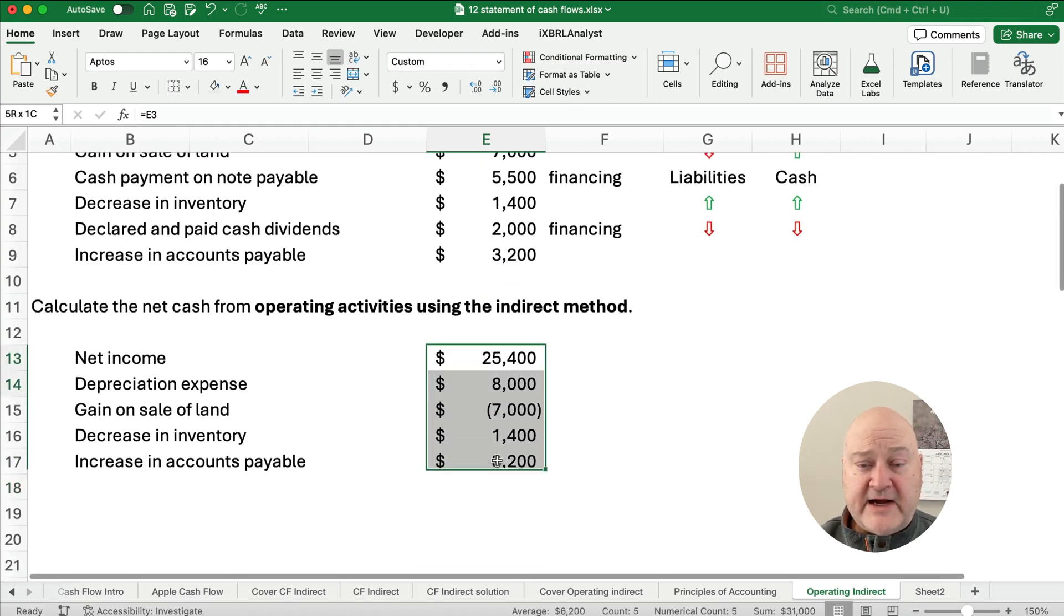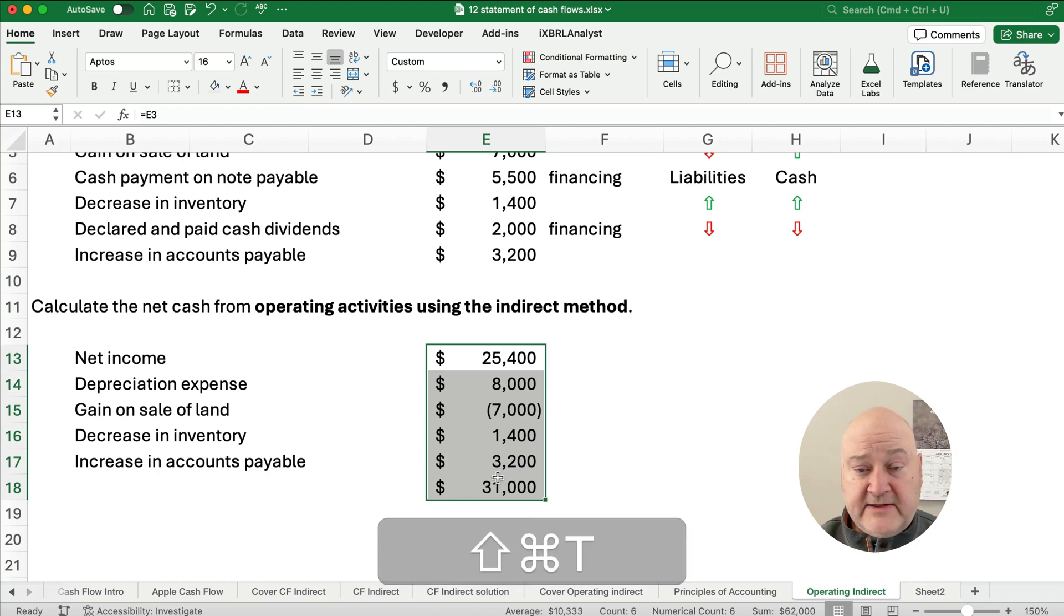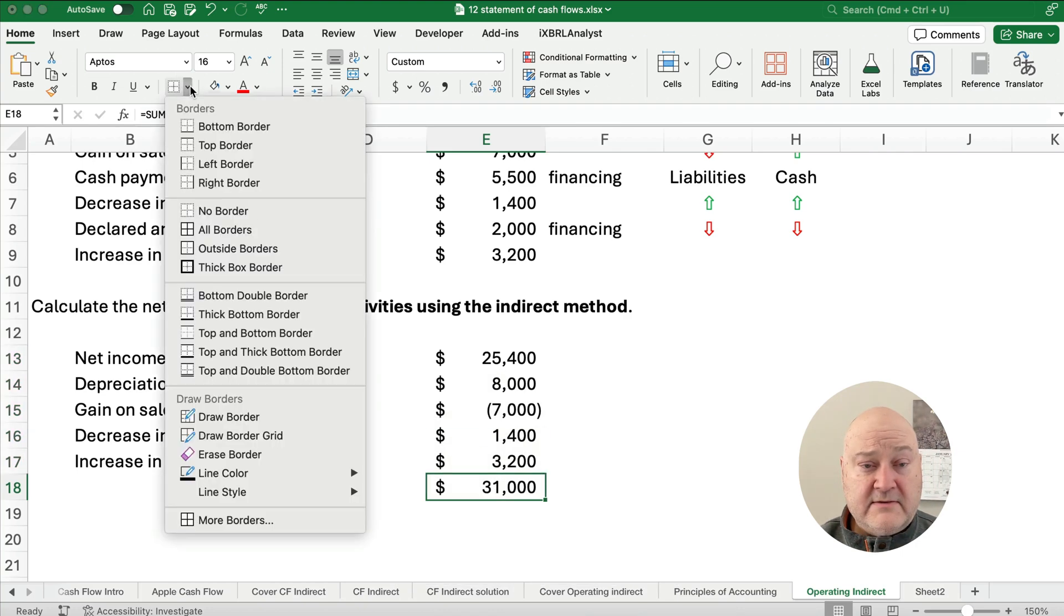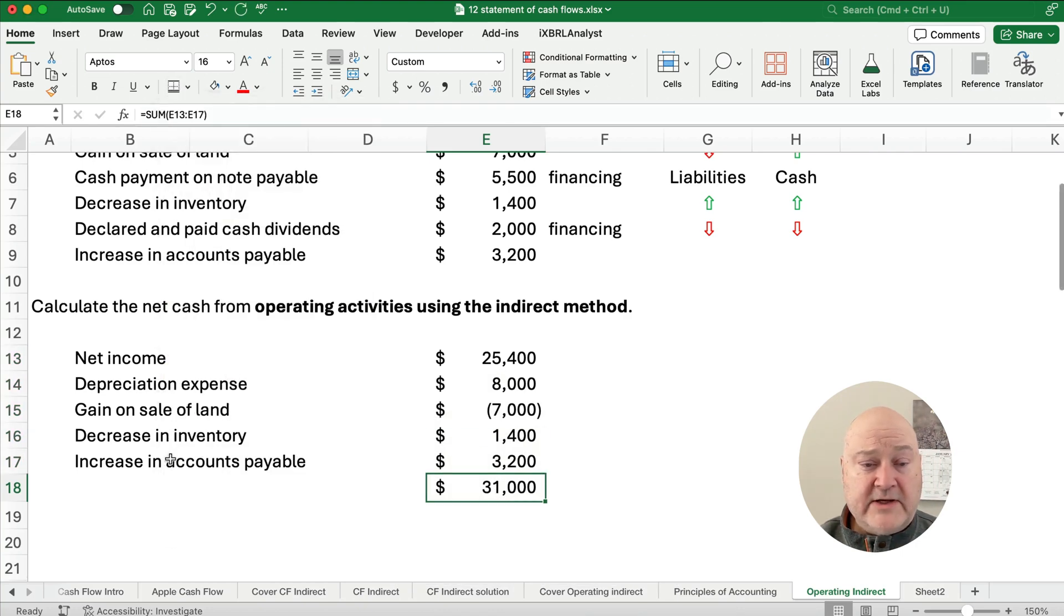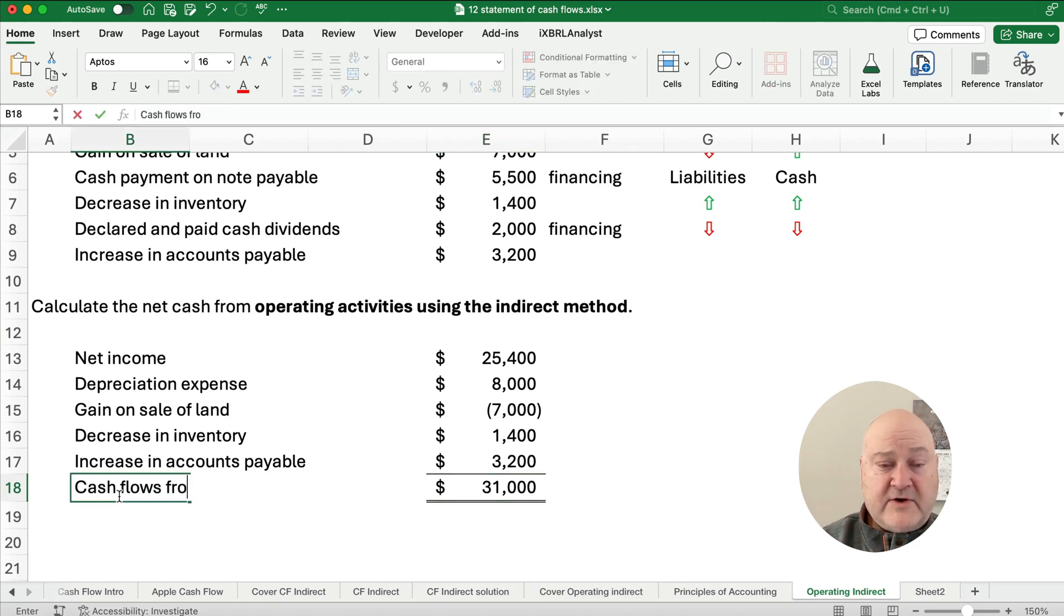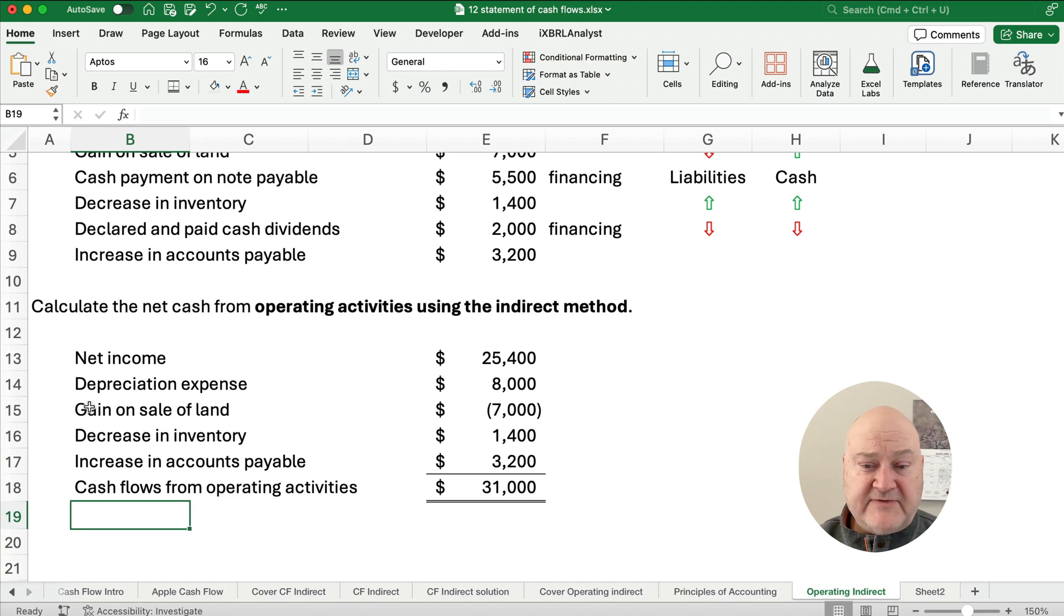So what is our total cash flows from operating activities? Well, it is, looks like $31,000. And we call this what? Well, this is cash flows from operating activities. So that's the first section on the statement of cash flow. Hey, we'll see you on the next video. Thanks for watching.